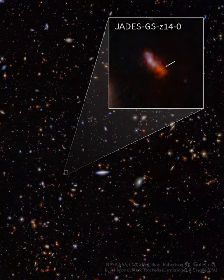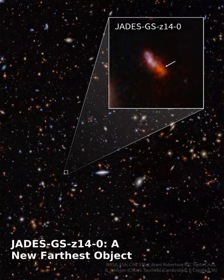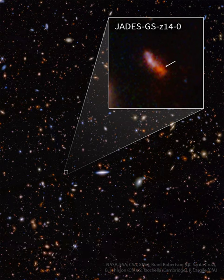What if we could see back to the beginning of the universe? We could see galaxies forming — but what did galaxies look like back then? These questions took a step forward recently with the release of the analysis of a James Webb Space Telescope (JWST) image that included the most distant object yet discovered.